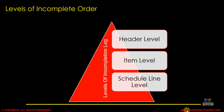Now, the levels of incomplete orders. These levels are customized at three different levels: header level, item level, and schedule line level. At the header level there is a separate incompletion procedure in the customizing assigned to the document type — for example, making the purchase order number (customer reference) mandatory. At the item level there is a separate incompletion procedure assigned to the item category — for example, plant and shipping point are mandatory. There is also the schedule line level, which we'll discuss in the customizing part in the next video.